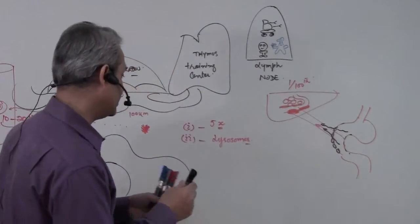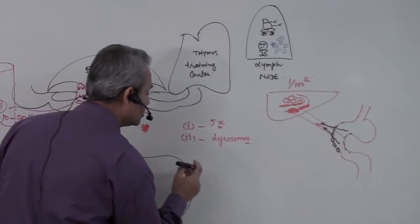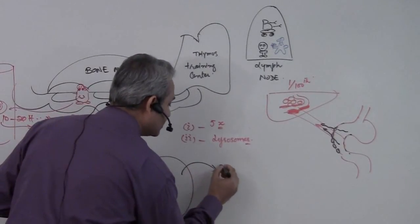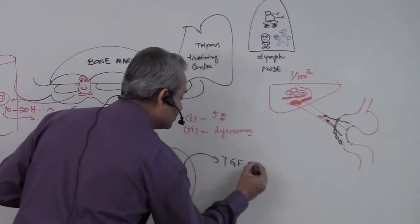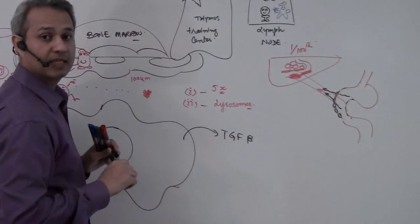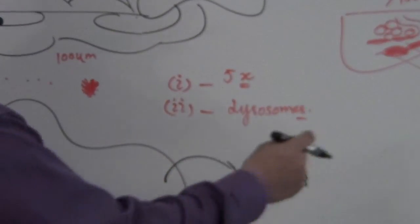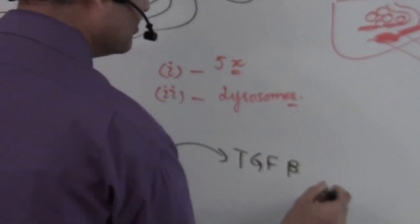Macrophage would release tumor growth factor beta. When it would find a pathogen coming in. Tumor growth factor beta.